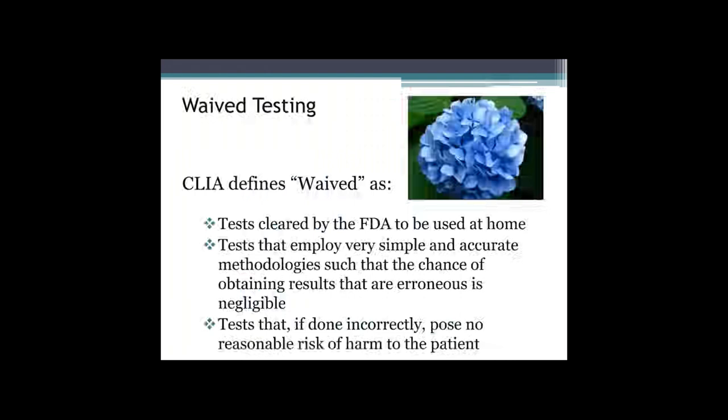In 1992, when the requirements for meeting CLIA were first published in the Federal Register, only simple and foolproof methods for eight analytes were waived. Beginning in 1997, Congress instituted revisions to the CLIA waiver provisions, and under the current process, waiver may be granted to any tests listed in the regulation, any test system in which the manufacturer provides scientifically valid data to meet the waiver criteria, and test systems cleared by the FDA for home use. Examples of these tests include glucose testing using a glucometer, pregnancy tests, and urine dipsticks — many of the tests you might see being performed in physician offices.